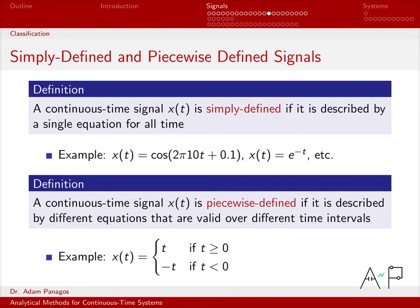So one big clue that you're working with a piecewise defined signal is that you see brackets like this and all these kind of cases over here. And a clue that you're working with a simply defined signal is that you just have a single equation and there are no curly brackets like that.